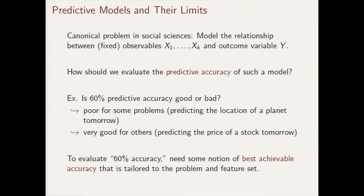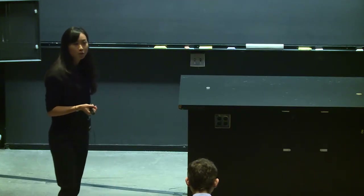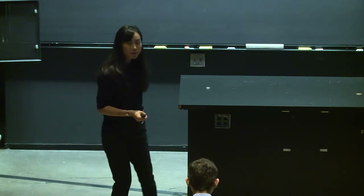Let's be more concrete. Say you have a model that predicts correctly in 60% of your test instances. Is that a good outcome? Is that a bad outcome? The answer depends a lot on the problem you're facing. If you've achieved that level of predictive accuracy predicting the location of a planet tomorrow, suitably discretized, based off of a rich set of physical measurements, 60% is pretty poor — we expect something much closer to perfect prediction.